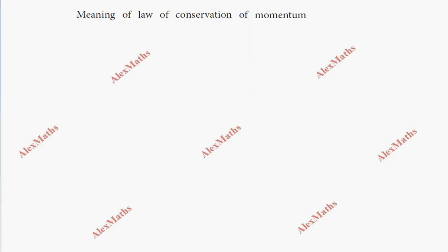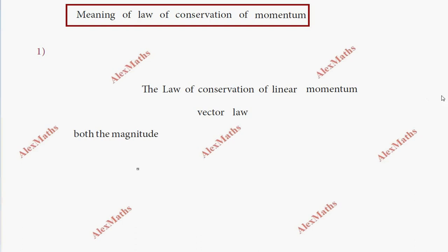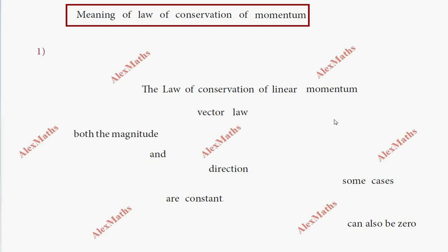Hi students, this is Alex. In this video, we are going to look at the law of conservation of momentum along with some examples. First, the law of conservation of linear momentum states that both the magnitude and direction of the total linear momentum are constant — it can also be zero. This is a vector law.